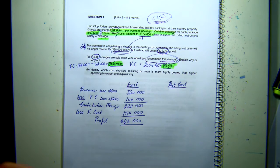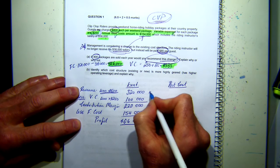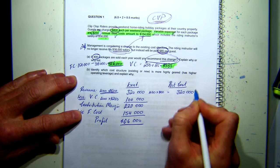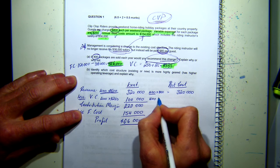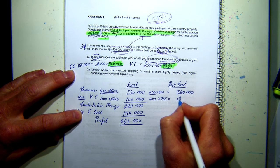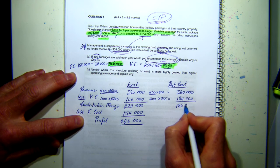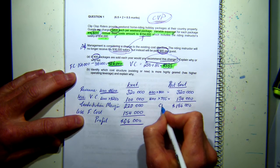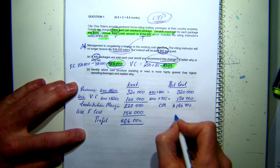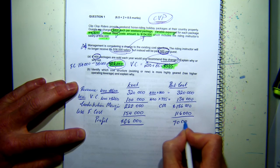We're going to make a comparison so we can make a decision. My revenue hasn't changed - it's still 400 times $800 equaling $320,000. We're still selling 400 packages. So my variable costs now: 400 times $335 equals $134,000. I'm going to have a new contribution margin of $186,000. My fixed costs are now $116,000, and that means I should have a profit of $70,000.